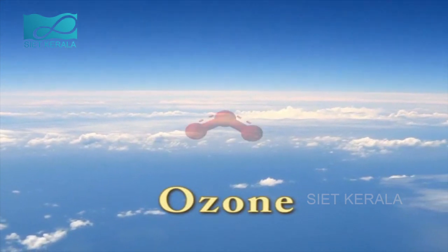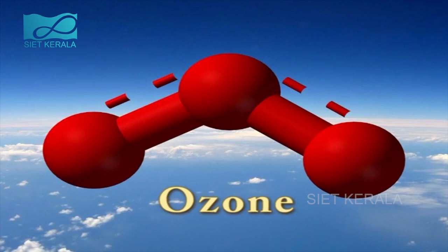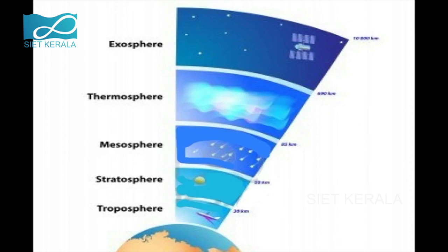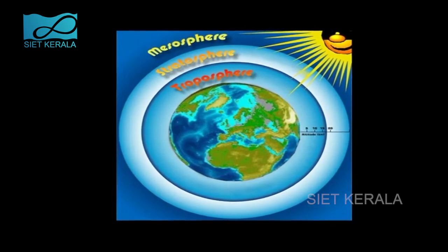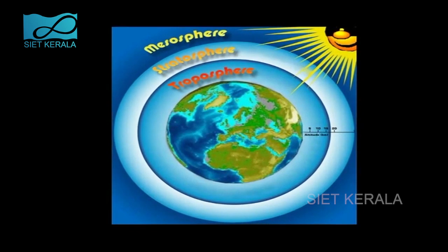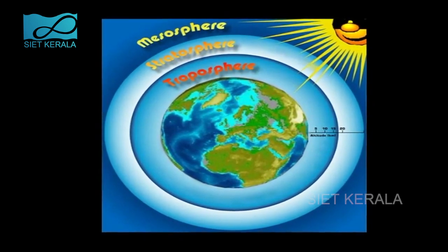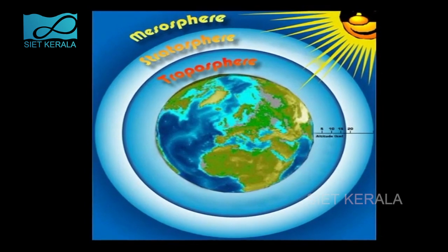Chlorine and its compounds cause various environmental problems, one of which is depletion of the ozone layer. Ozone is formed by combining three oxygen atoms and is mainly found in the stratosphere. The equation for ozone formation: 3O2 ⇌ 2O3 (in the presence of ultraviolet rays). The energy for splitting oxygen comes from absorption of UV rays; the atoms thus formed combine with unbroken oxygen molecules to form ozone, which then splits back into oxygen by absorbing more ultraviolet rays.